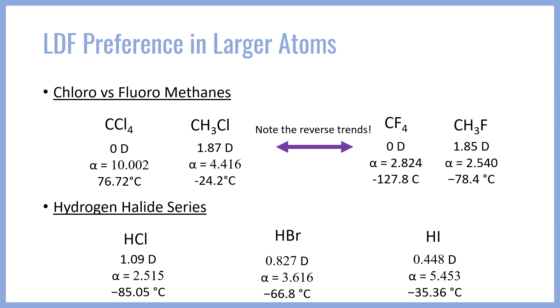So we see that while in small molecules — like those involving period 2 elements C, N, O, or F — dipole moments matter quite a bit, when we talk about larger atoms like chlorine, bromine, and certainly iodine, polarizability starts to become the dominant factor. I want to finish by elaborating on how complex a balance there is between these two forces in most molecules.